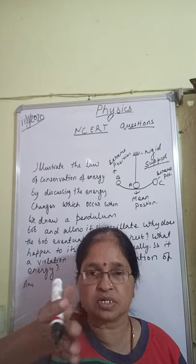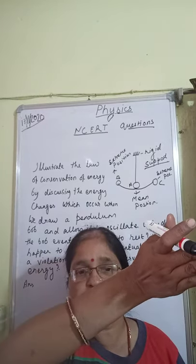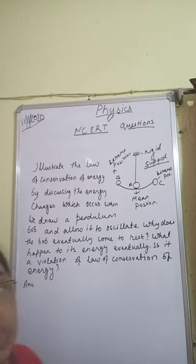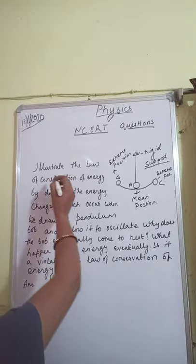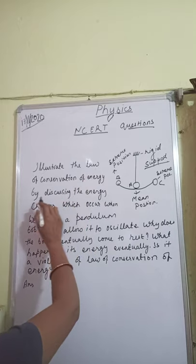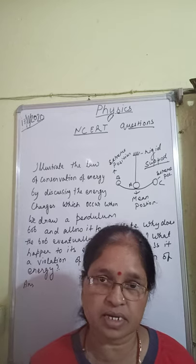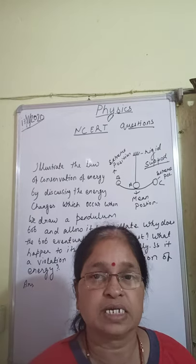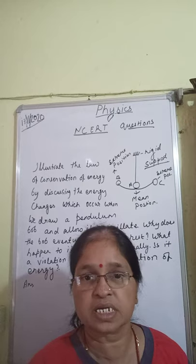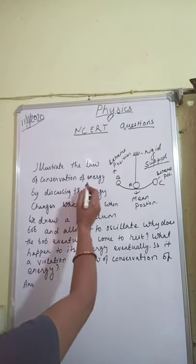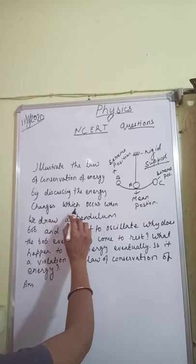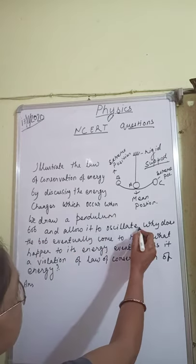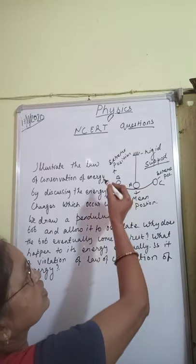The pendulum swings from the mean position to one extreme, then to the other extreme. The question asks us to illustrate the law of conservation of energy by discussing the energy changes which occur when we draw a pendulum bob and allow it to oscillate.